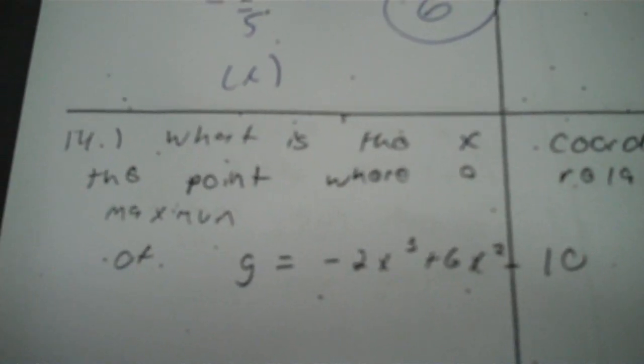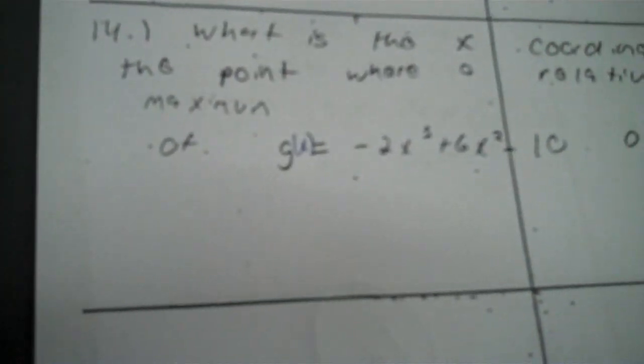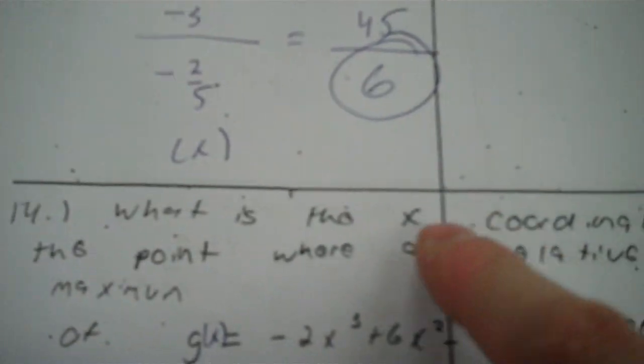What is the X coordinate of the point where a relative maximum occurs? You'd need a graphing calculator. Punch in: negative 2X cubed plus 6X squared minus 10. Go find the relative maximum — it's a loop where it goes upward. The calculator says the maximum is at X equals 2, Y equals negative 2. It says the X coordinate, so the answer is 2.